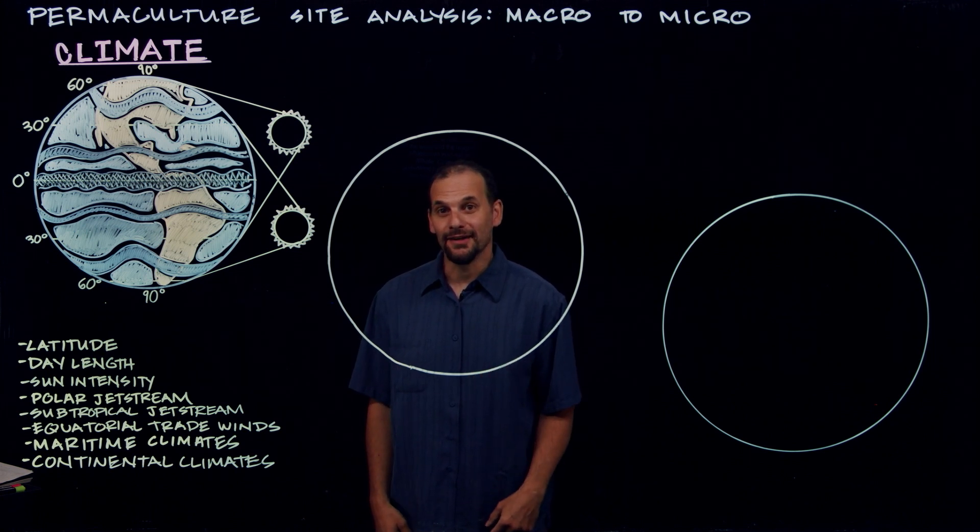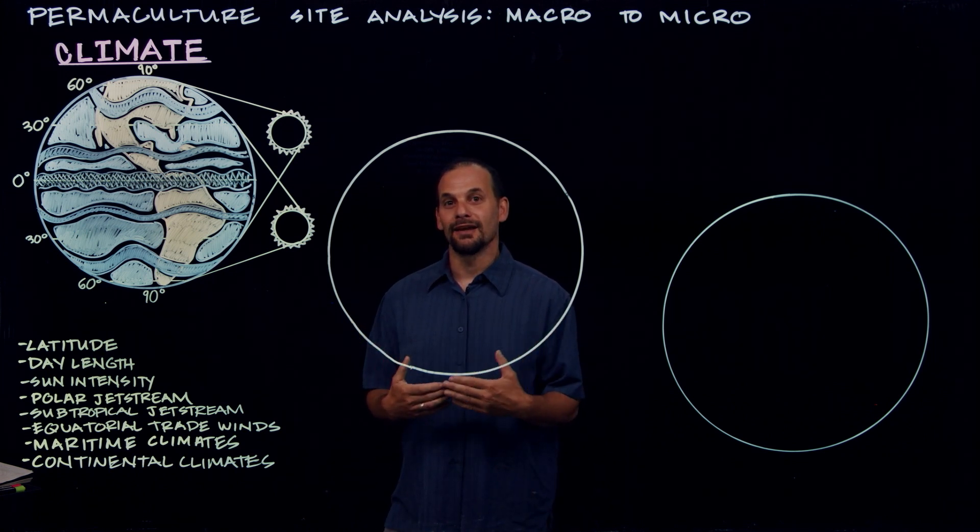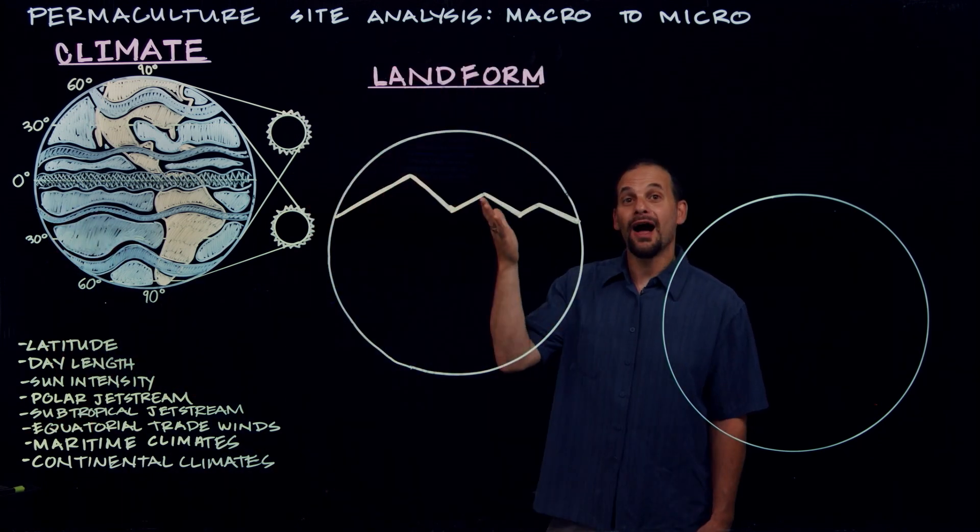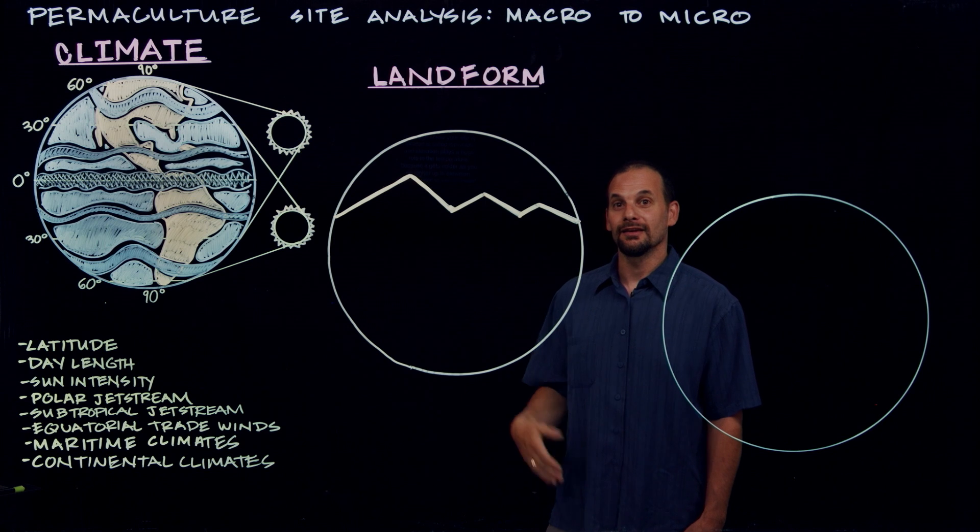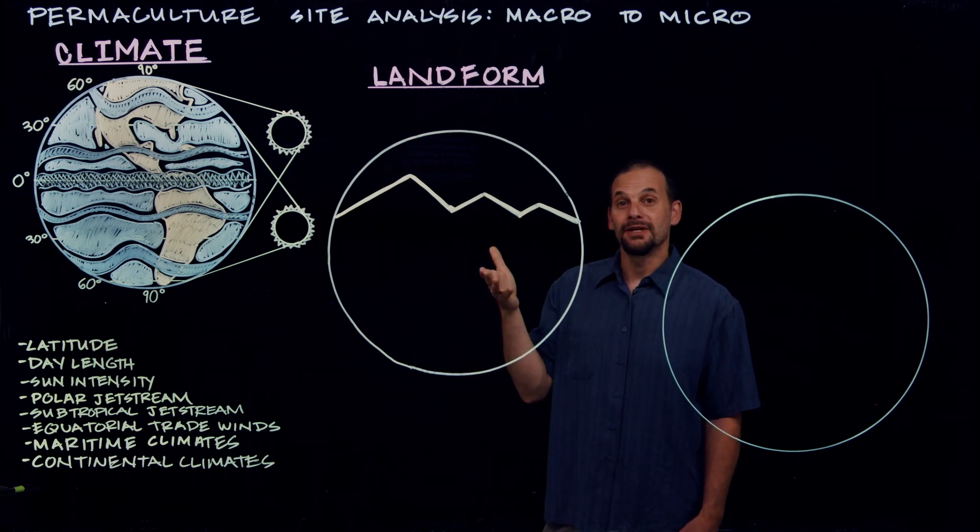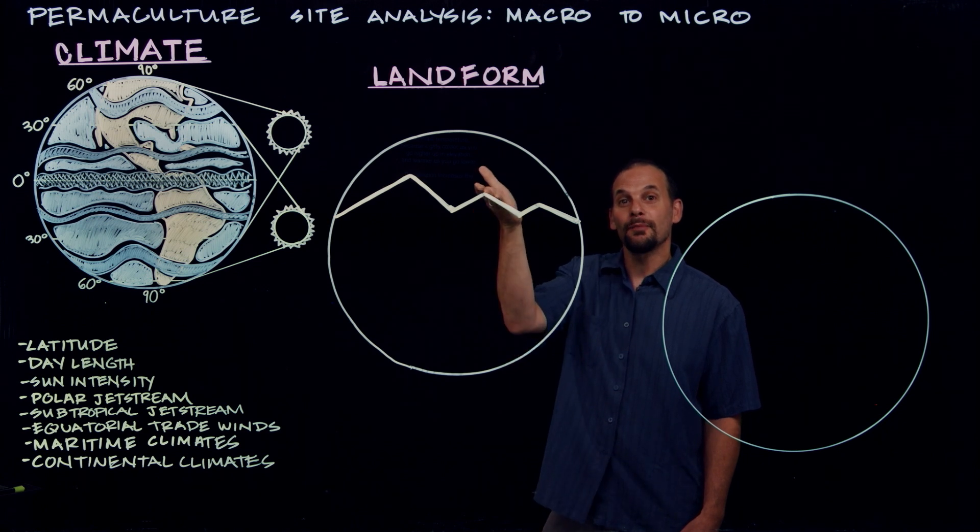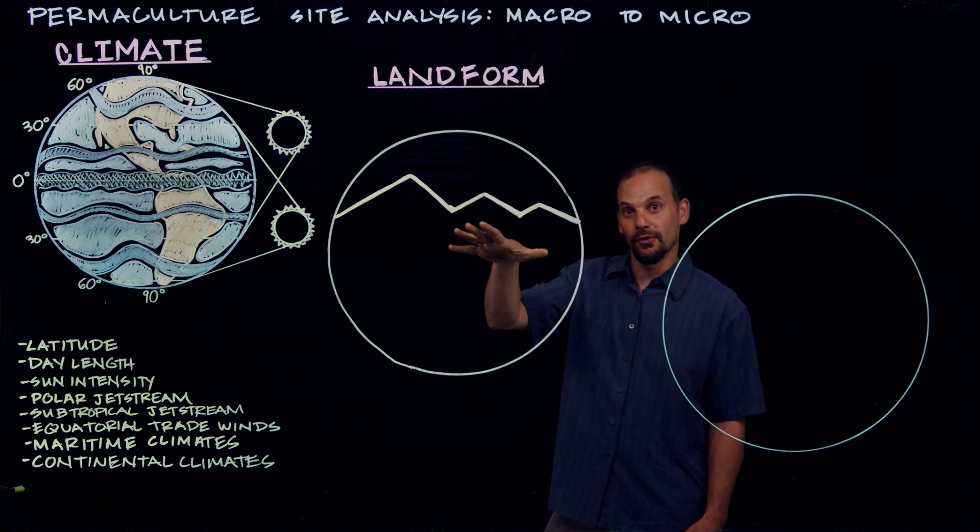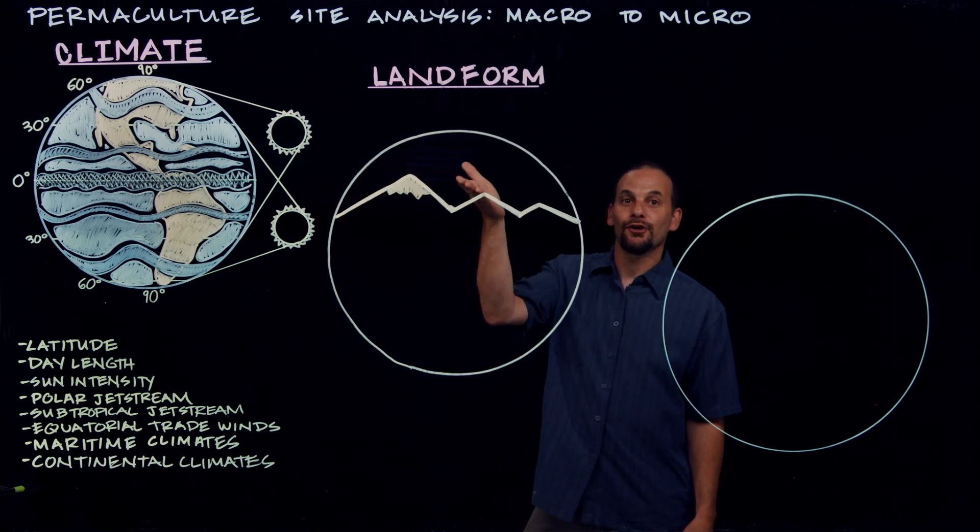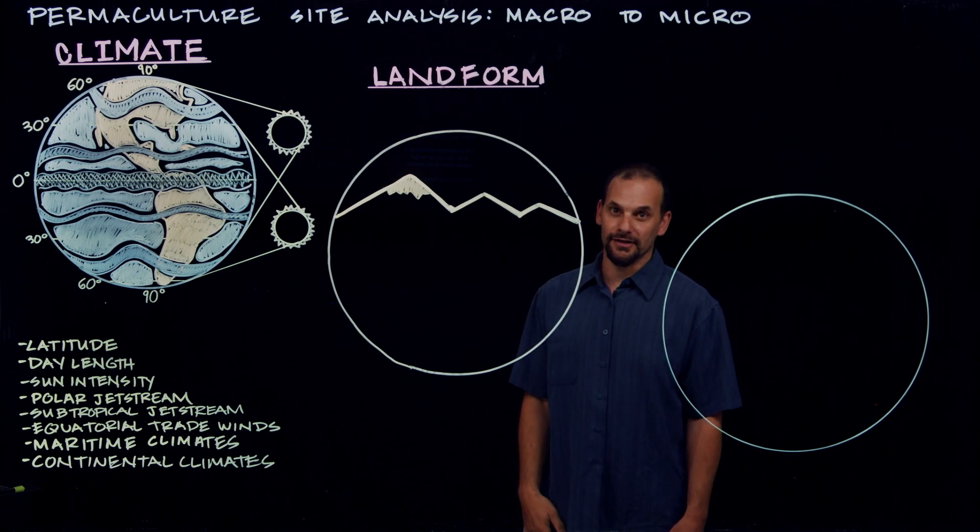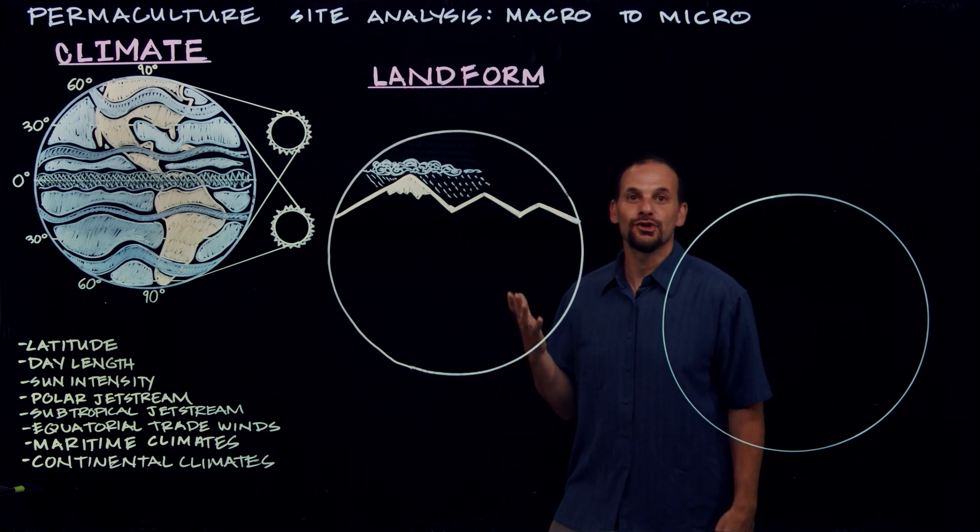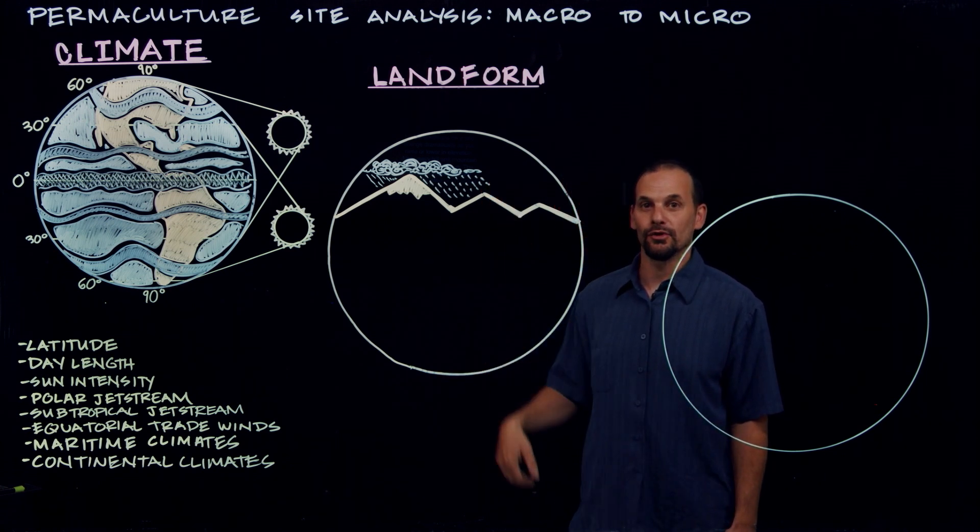Once you understand your climate, it's time to zoom in and look at the landform. How high or low your site is located is called elevation. And elevation plays a huge role in temperature because it gets colder as you go higher up in elevation and warmer as you go lower. Precipitation increases the higher up you go and decreases in lower areas. The conditions on a site change dramatically as you raise or lower an elevation.